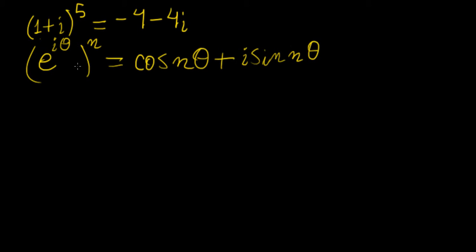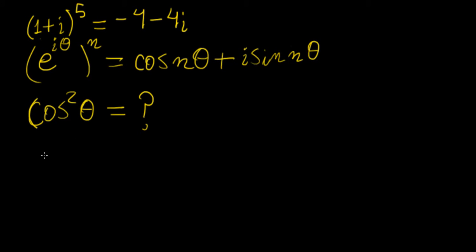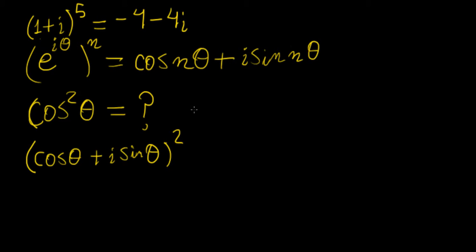We're interested in finding an expression for cosine squared theta in terms of something else — we want to reduce this to a power of one using relations between trigonometric functions. We write cosine theta plus i sine theta, all squared. The reason for doing this is to extract that cosine squared. Similarly, for cosine cubed theta, we would cube the whole expression. Remember, this is just e to the i theta, so this is De Moivre's theorem, and the right-hand side is cosine 2theta plus i sine 2theta.